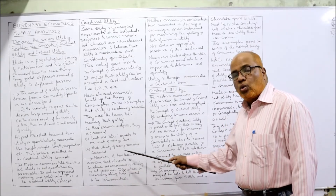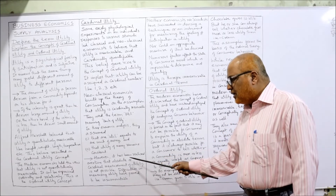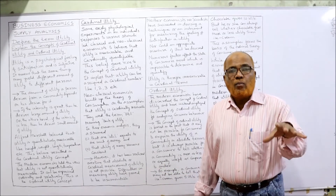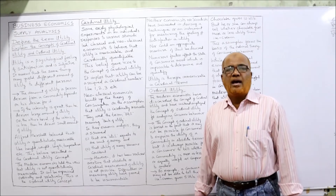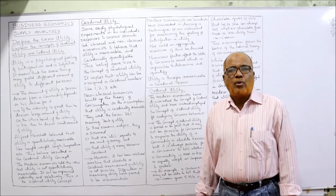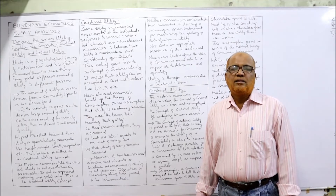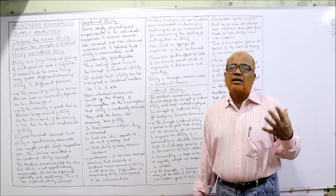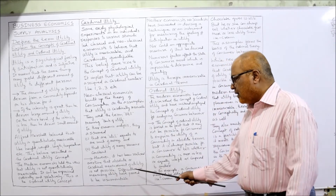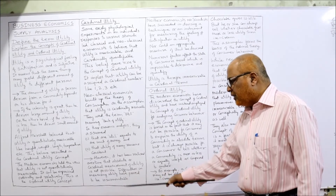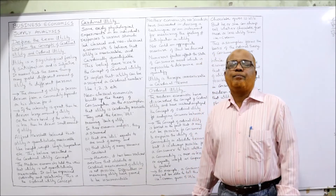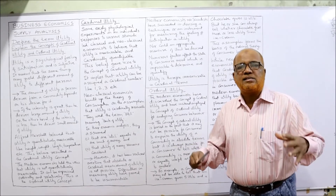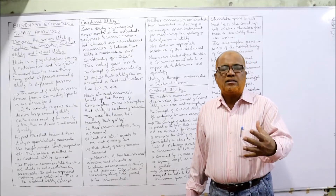However, it has been realized over time that absolute or cardinal measurement of utility is not possible. Modern economists realize that it is not easily possible to calculate utility precisely. We cannot accurately measure utility — we can only feel the satisfaction. Difficulties in measuring utility have proved to be insurmountable. Many practical problems arise when we try to calculate satisfaction.